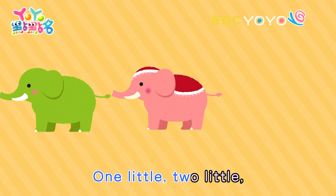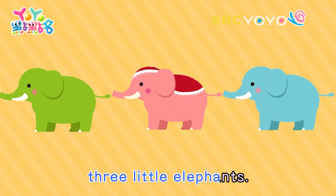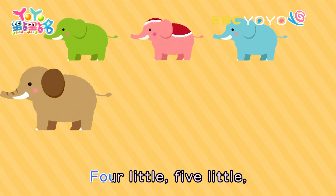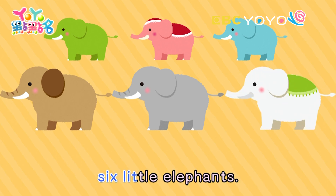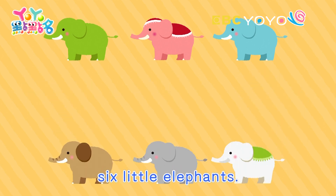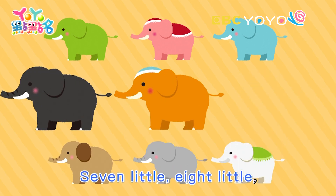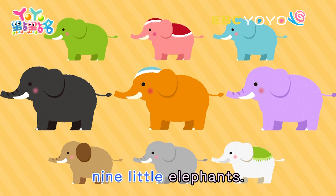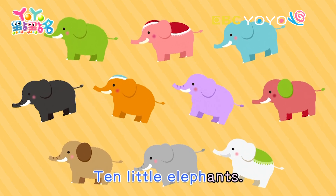One little, two little, three little elephants. Four little, five little, six little elephants. Seven little, eight little, nine little elephants. Ten little elephants.